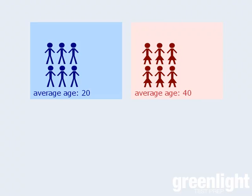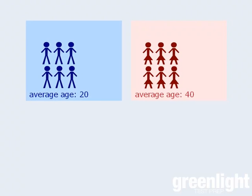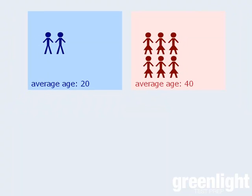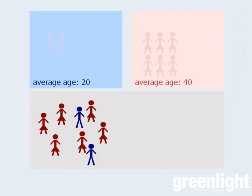Now let's take the original question and change it slightly. Let's keep the average ages of the men and women at 20 and 40 respectively, but let's remove 4 of the men. Now if we combine the two groups, what will be the average age of the combined population?